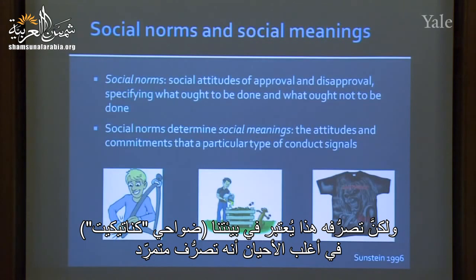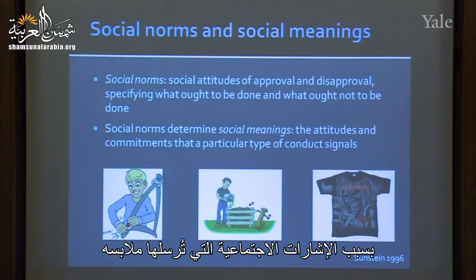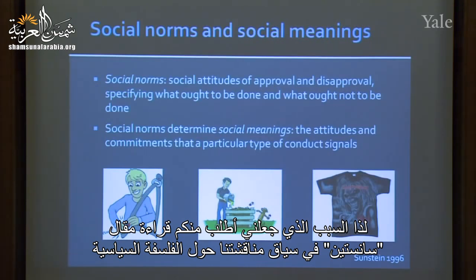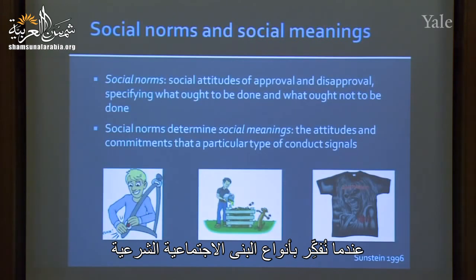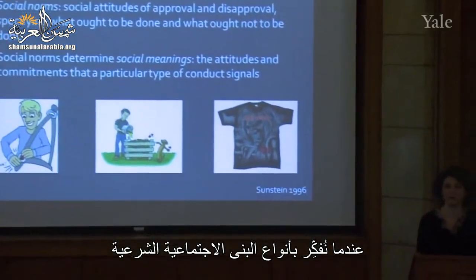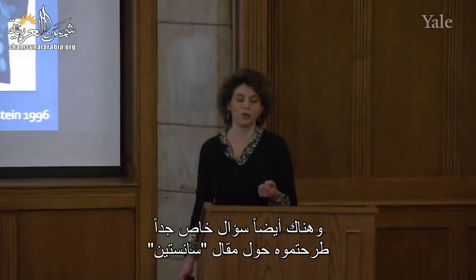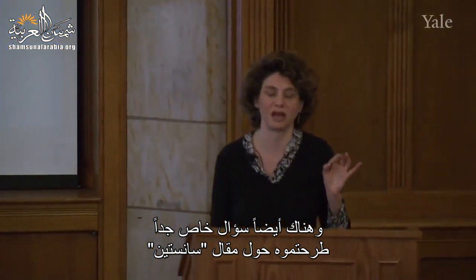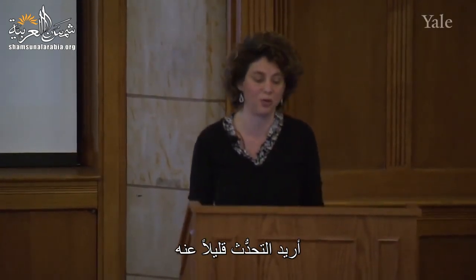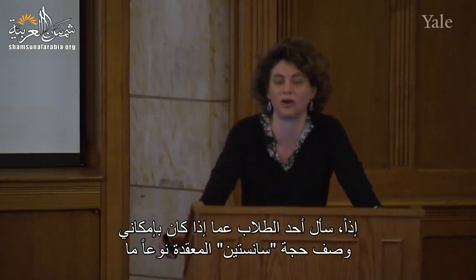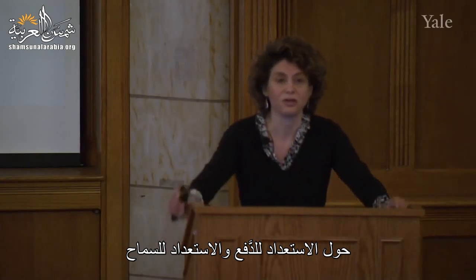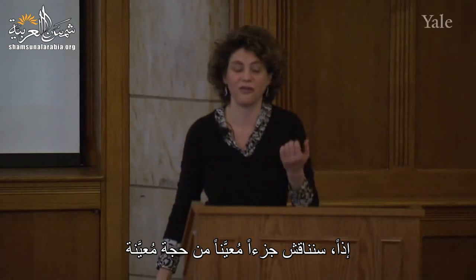The reason I had you read the Sunstein article in the context of our political philosophy discussion was to point out how many more layers of complexity there are when we start thinking about what kinds of social structures are legitimate. There was also a very particular question about the Sunstein article raised in the context of our feedback page — a student asked whether I could characterize Sunstein's somewhat complicated argument about willingness to pay and willingness to allow.